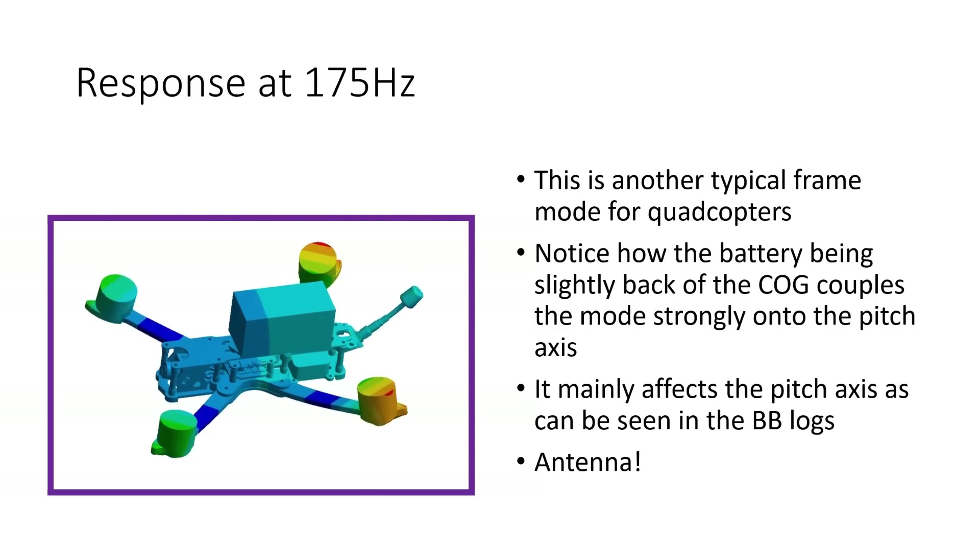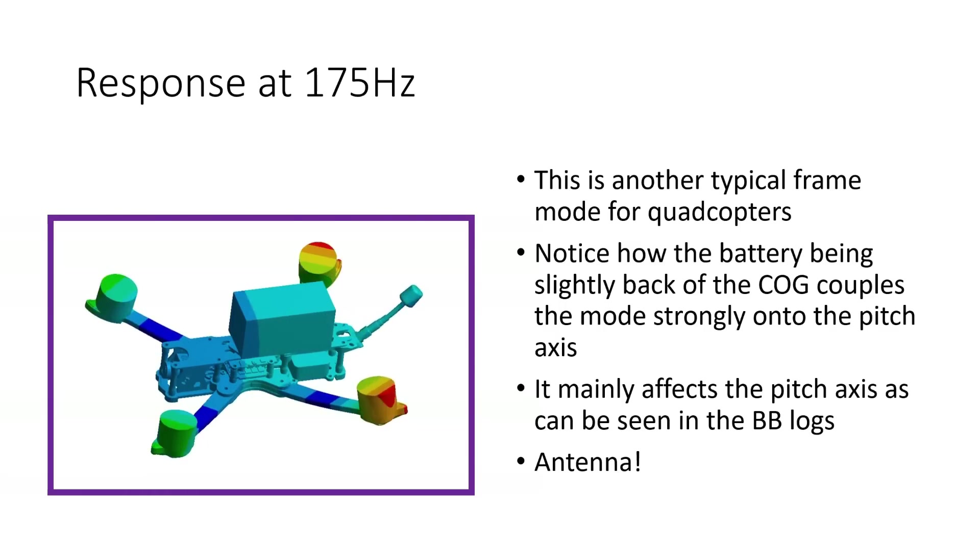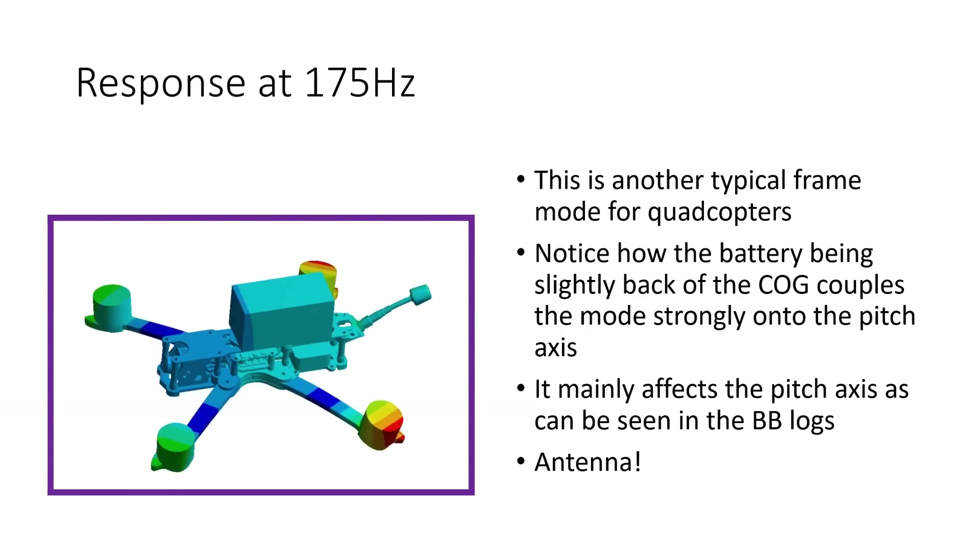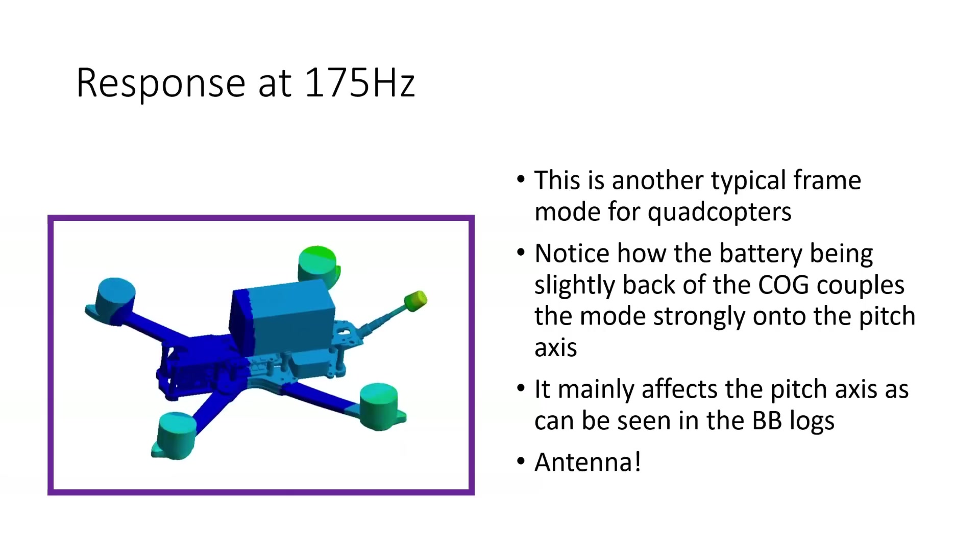Now obviously if you were to add a GoPro onto the front of this frame that would change the COG, but I think this is a really good point to make here that the center of gravity of the quad, the center of mass, should really be as central as possible. It doesn't have to be necessarily where the flight controller is but it does need to be central to the arms. Also it's worth mentioning here that the antenna is still participating in this mode and increasing the amount of vibration because of its mass moving around.